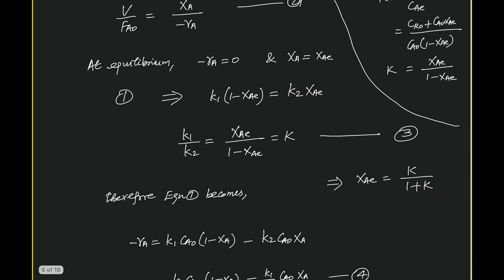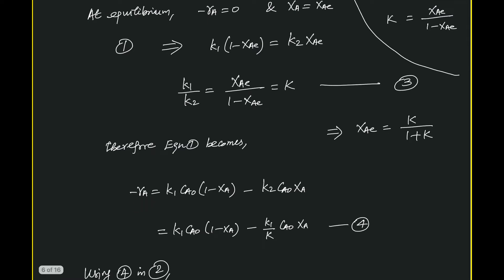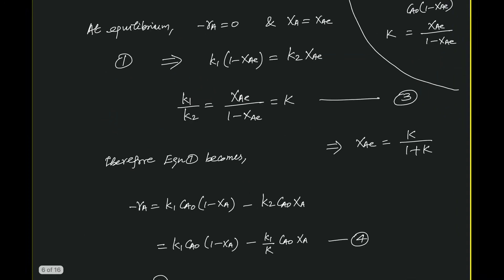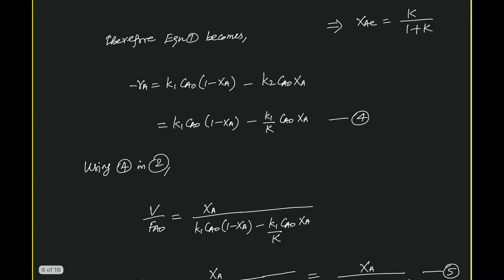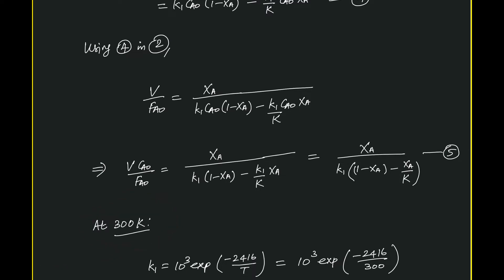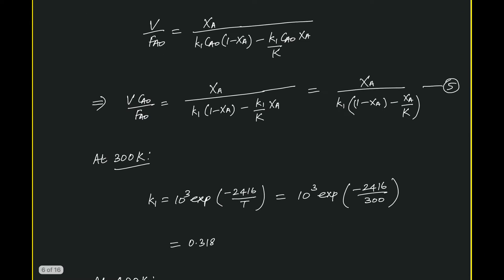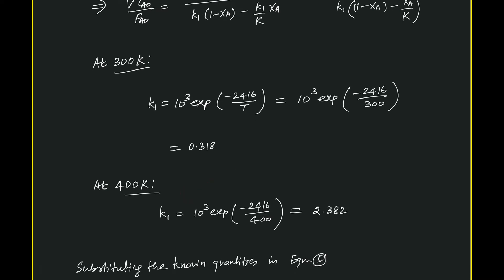This means capital K equals K1/K2. Using the value of capital K, we can get K2. Everything is now available: Xae is 60%, K1 is available as a function of temperature, and K is also available at each temperature. Substituting the values corresponding to 300 Kelvin, K1 is obtained. Similarly, we can get the rate constant at the other temperature.